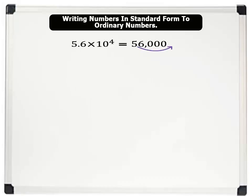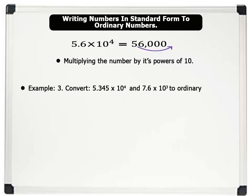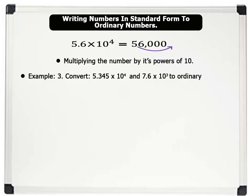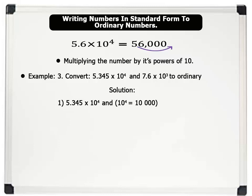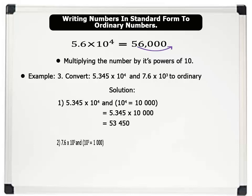Finally, we can convert numbers in standard form back to ordinary numbers. We do this by multiplying the number by its power of 10. Example 3: convert these numbers to ordinary numbers. Solution: 5.345 is multiplied by 10 to the power of 4, and 10 to the power of 4 equals 10,000, therefore 5.345 × 10,000 = 53,450. Also, 7.6 is multiplied by 10 to the power of 3, and 10 to the power of 3 equals 1,000, therefore 7.6 × 1,000 = 7,600.